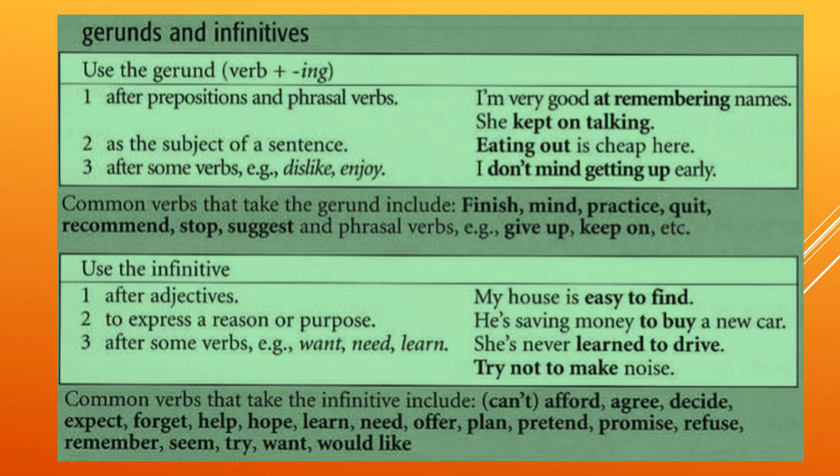We use infinitive — means verb plus 'to'. After adjectives: 'My house is easy to find.' To express a reason or purpose: 'He is saving money to buy a new car,' meaning 'in order to buy a new car,' or 'so as to buy a new car.'